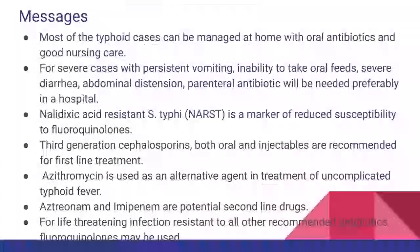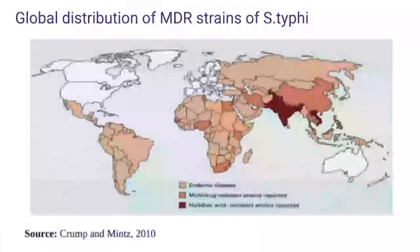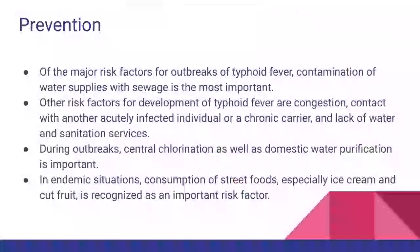A map showing the global distribution of MDR strains of S. typhi indicates that in India there has been reporting of nalidixic acid-resistant strains.